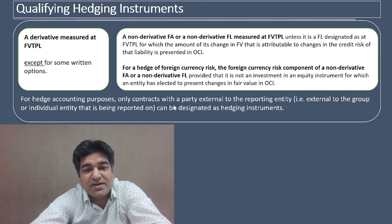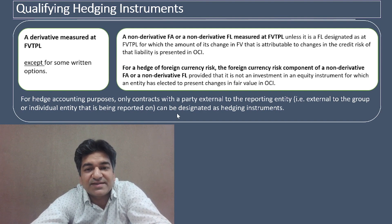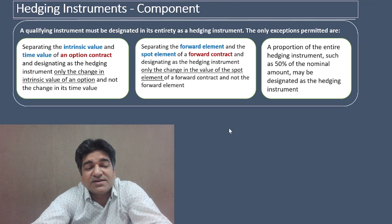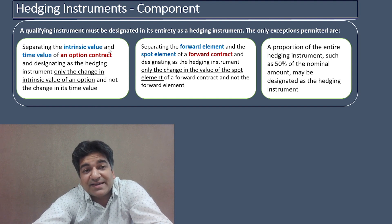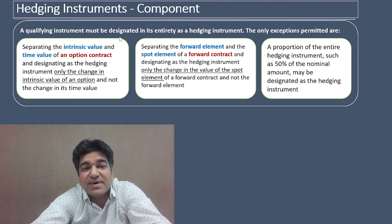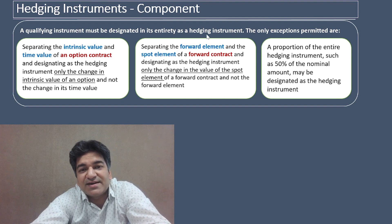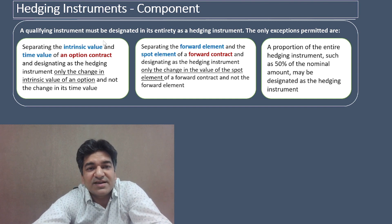For hedge accounting purposes, only contracts with a party external to the reporting entity can be designated as hedging instruments. Now, a question arises: just like a component can be designated as a hedged item, can a component of a hedging instrument also be designated as a hedging instrument? Ind AS 109 says a qualifying instrument must be designated in its entirety as a hedging instrument. However, Ind AS 109 has given three exceptions where a component can also be a hedging instrument.